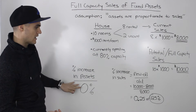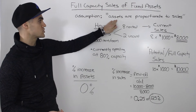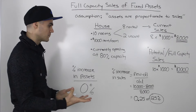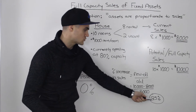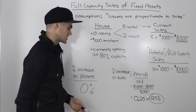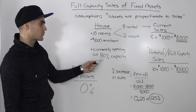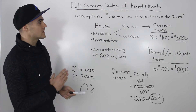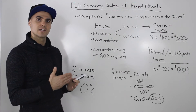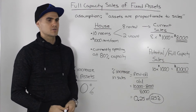Notice how with these two figures in this example we already disproved the assumption that assets are proportionate to sales — the assumption we've been making all along. Sales in this case grew twenty-five percent, and in previous examples the assets would have had to grow twenty-five percent as well, but in this case we didn't have to grow the assets at all because they were only operating at eighty percent capacity. The reason why in previous examples assets were proportionate to sales is because we assumed the assets were operating at full capacity, but in reality that's not always going to happen.